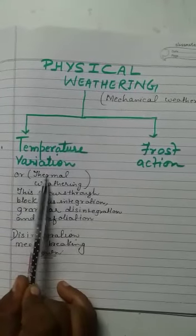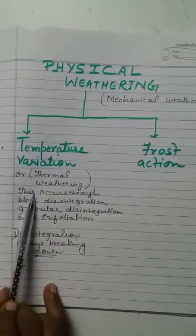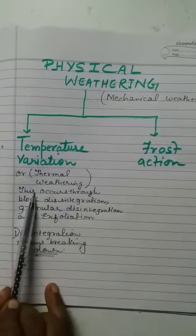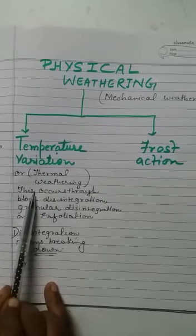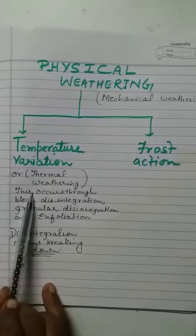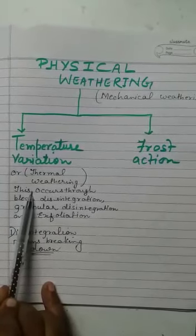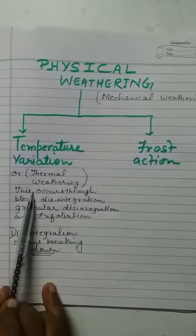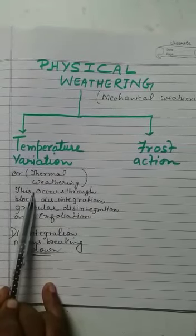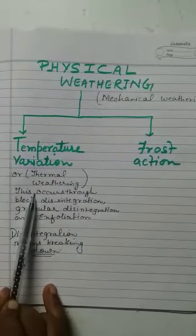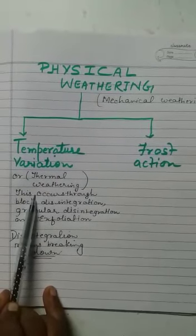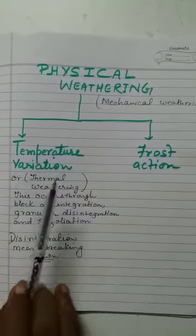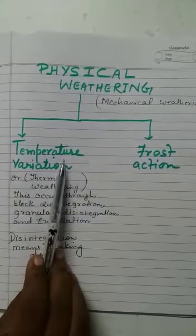Temperature variation: weathering of rocks due to variation in temperature is common in plateau and desert regions where the daily range of temperature is high. When rocks are heated up during the day, they expand. At night, when the temperature drops, the rocks cool down and contract.